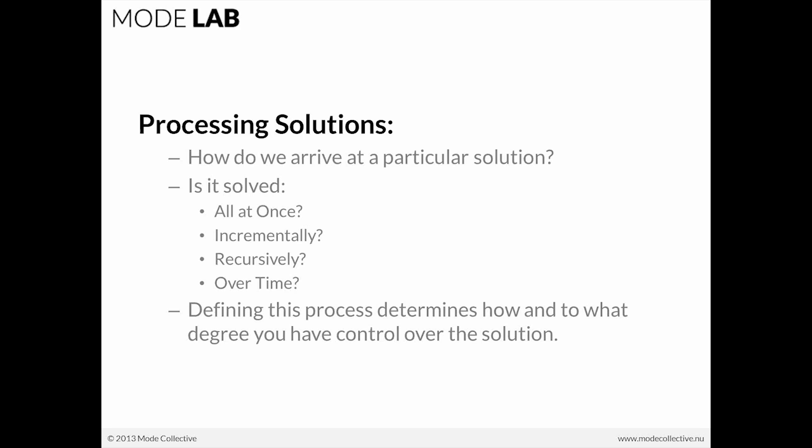When we're working with Grasshopper, the solution is done all at once — what we see is always the current state. In contrast, we might process relationships incrementally or recursively, which falls within the paradigm of scripting, where we write code to incrementally step through a series of actions. But the most interesting for today is that we can also solve relationships over time — that's the key factor with simulation. Defining how the solution is processed determines how and to what degree you have control over that solution.